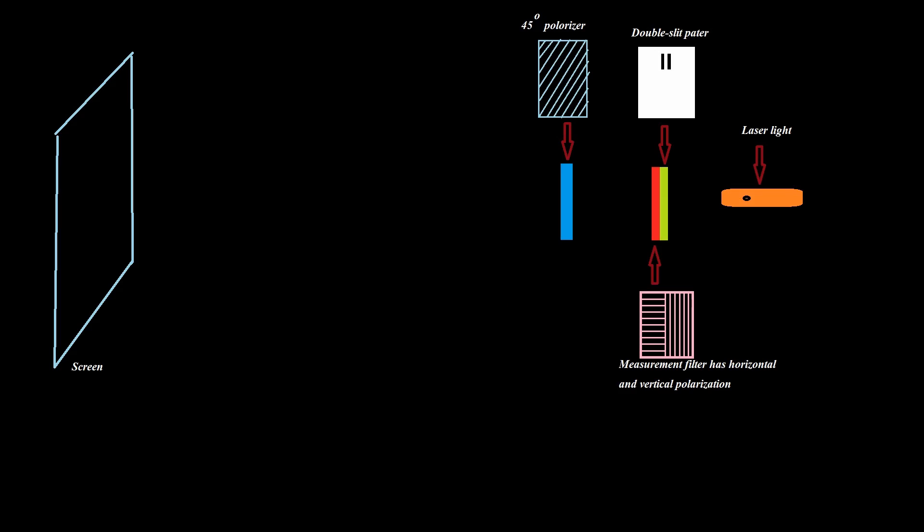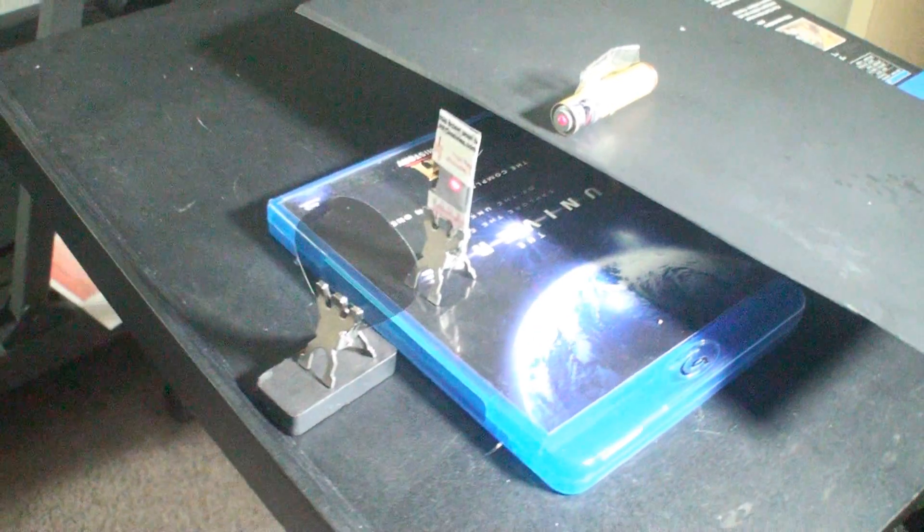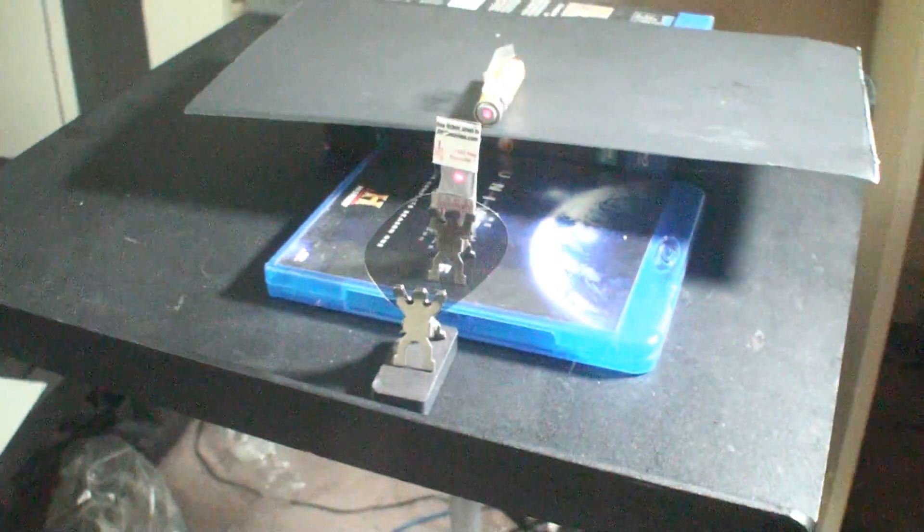Okay, let us erase the which-path information. Fix the other polarization filter at 45 degrees in front of the slit. Now you can see the wave pattern again. You have successfully erased the observed state. Good job!